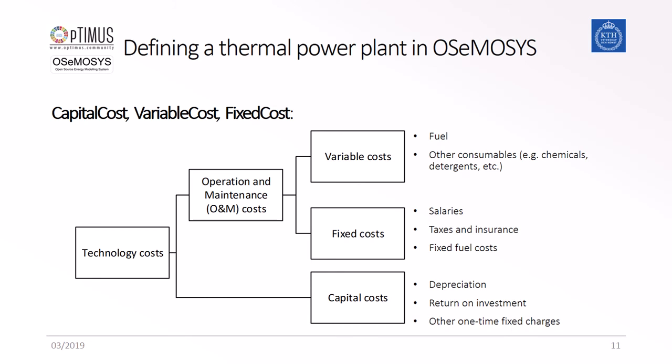Looking more into the details of the cost parameters of the power plants, there are three parameters that are defined. For the variable cost, the fuel for a thermal power plant is typically defined upstream in the reference energy system, in the primary energy supply. This means that the cost for the fuel is defined in the fuel technology, allowing different prices for domestically produced and imported fuels such as natural gas. The variable cost related to the power plant technology — in our example, the combined cycle gas turbine — covers other consumable costs related to producing one energy unit.